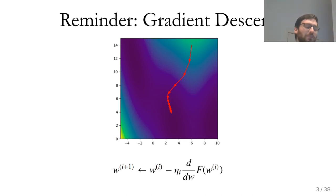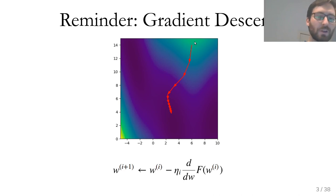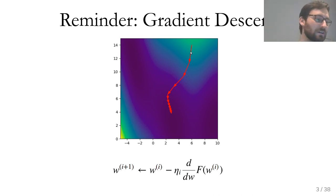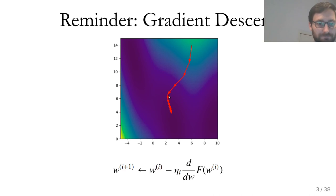Here's an example showing what this looks like on the function. We initialize up here, compute the gradient which points in a certain direction, and there's a learning rate eta that says how big a step to make at each step. This can be a constant or decreasing over time. We step in the direction of the gradient, compute it again, and repeat. As we get closer to the minimum the steps become shorter because the gradient gets smaller. Here I used a constant step size and we end up at a local minimum.